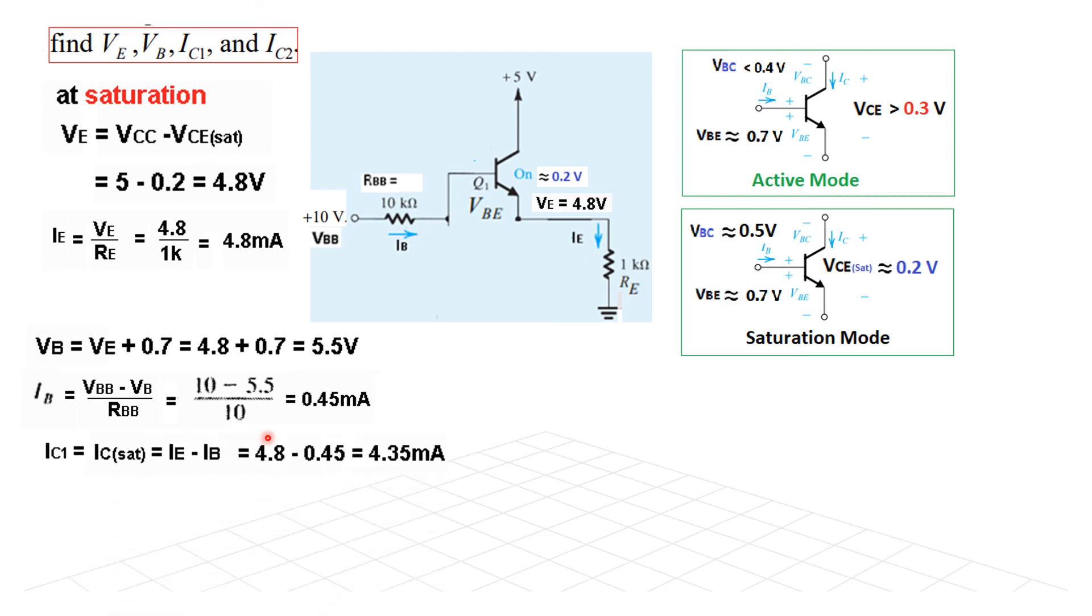Now we know IE, therefore we can find IC saturation or IC1, which is actually IC saturation will be IE minus IB. So IE minus IB will give IC. So we are writing the value IC saturation is 4.35 milliampere.